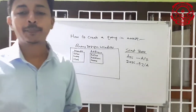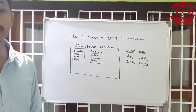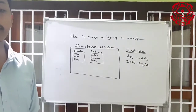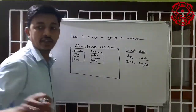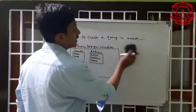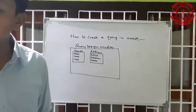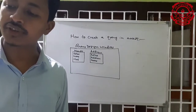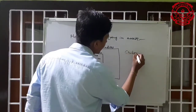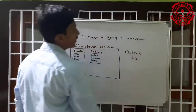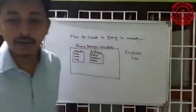Next, in the criteria options of the query design, you can see there are six options: field, table, sort, show, criteria, and or. In the criteria option you can give a condition — for example, greater than or equal to 70 for percentage. You can set conditions to filter the data displayed.